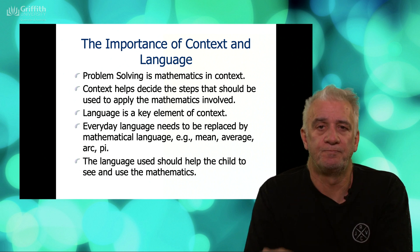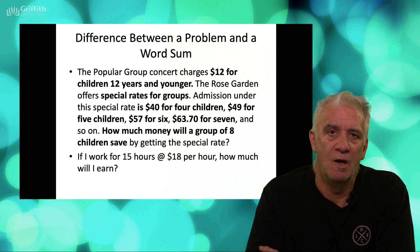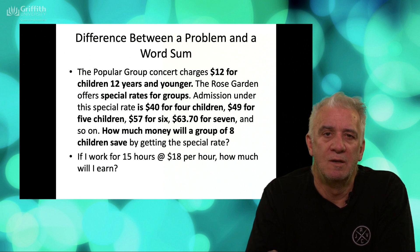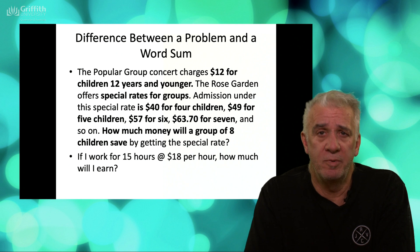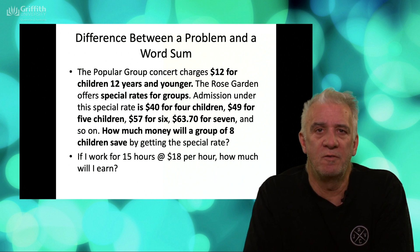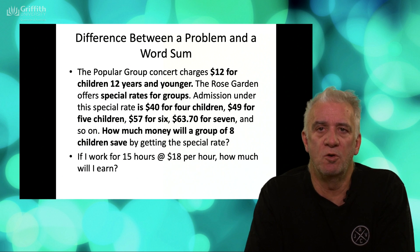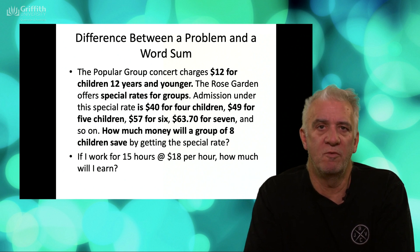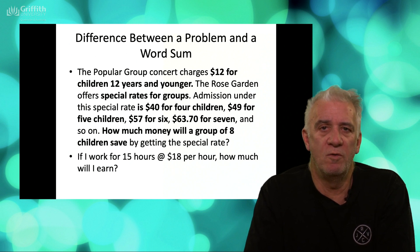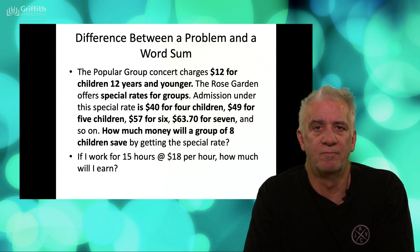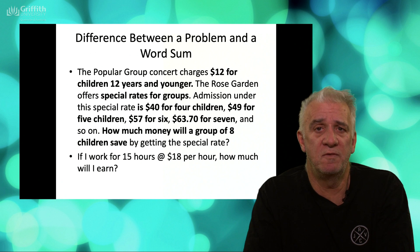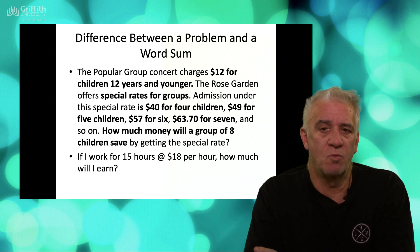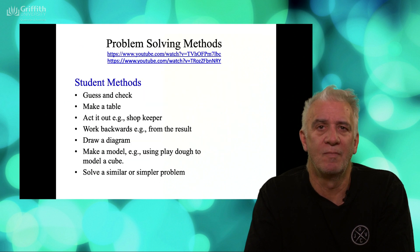Here's an example: a popular group concert charges $12 for children 12 years and younger. The Rose Garden offers a special rate — $40 for four children, $49 for five, $57 and so on. How much will it cost for a group of eight? That's a problem requiring more than just applying a routine algorithm. Whereas: if I work for 15 hours at $18 per hour, how much will I earn? — that's just a routine calculation. That example shows the difference between the two.